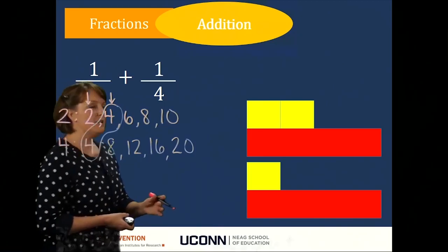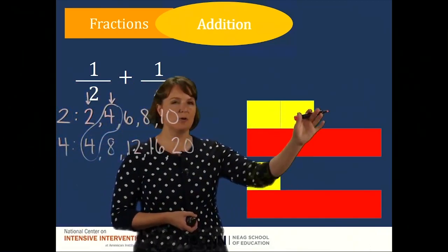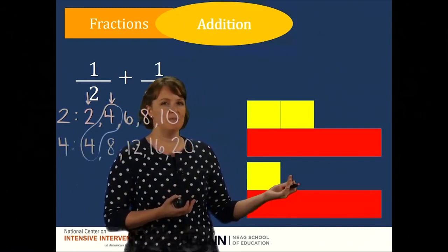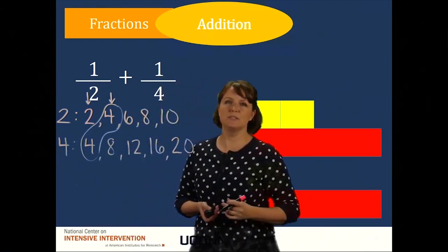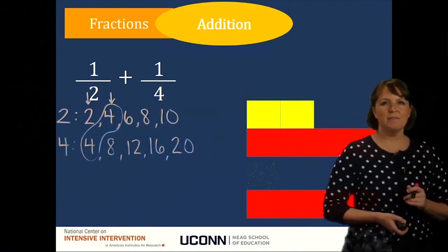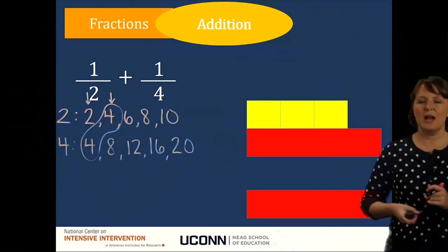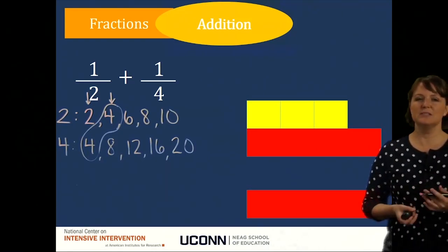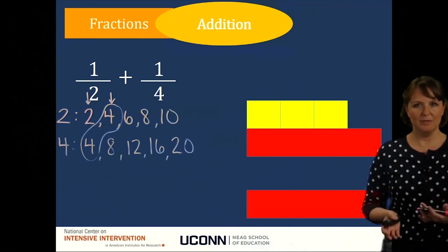Now that I have my pictorial representation and my parts are all of the same size with the same value, it's very easy to add those together. I start with my one-half and I add this one-fourth piece. So one-half plus one-fourth is the same as three-fourths.